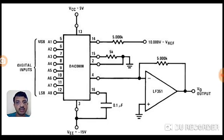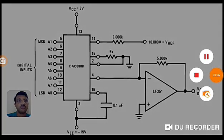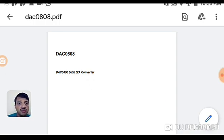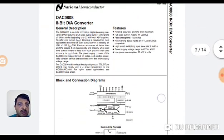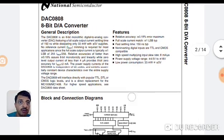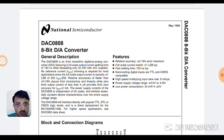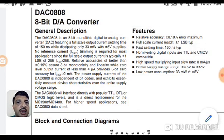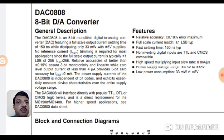VCC should be 5 volts and VEE should be minus 15 volts, and the rest of the connections should follow the data sheet recommendations. You can refer to the DAC 0808 data sheet from Texas Instruments for complete details and features. The data sheet states that I-reference should be greater than 2 milliamperes for better accuracy, and the least change for one LSB is 255 times I-ref divided by 256, giving plus or minus 1 LSB resolution.